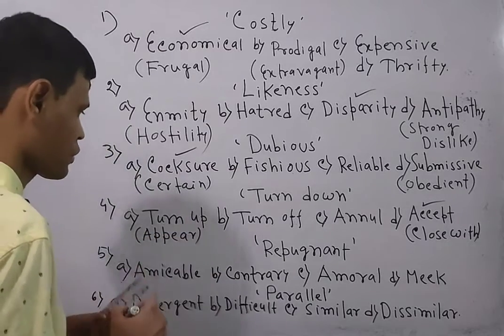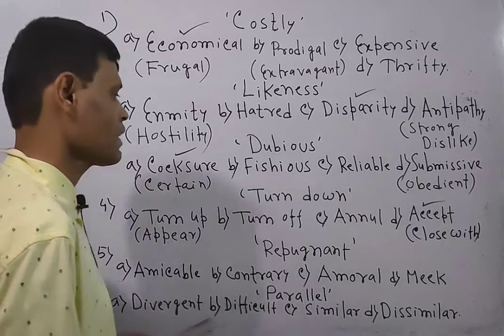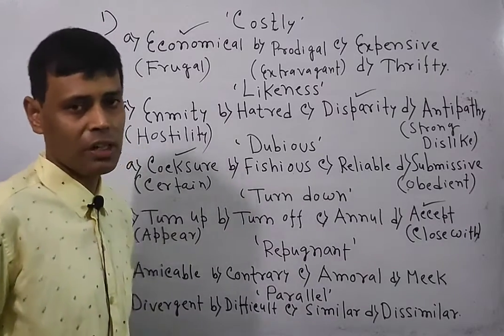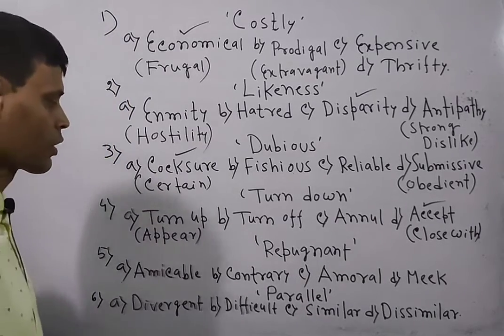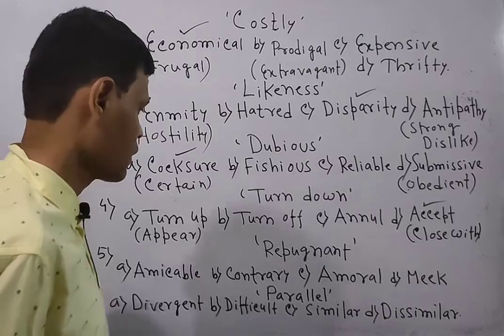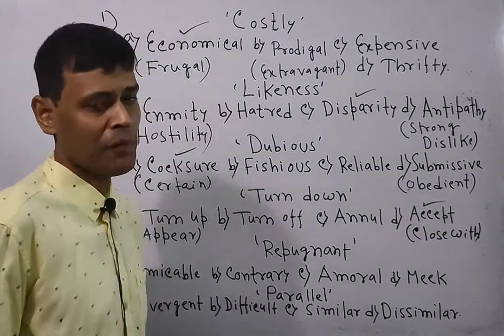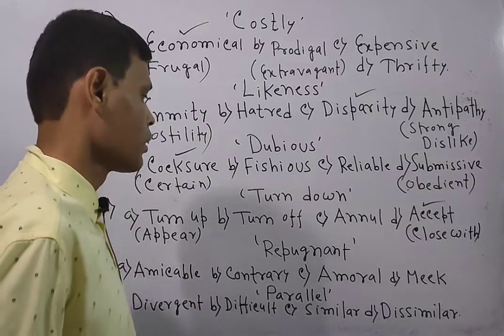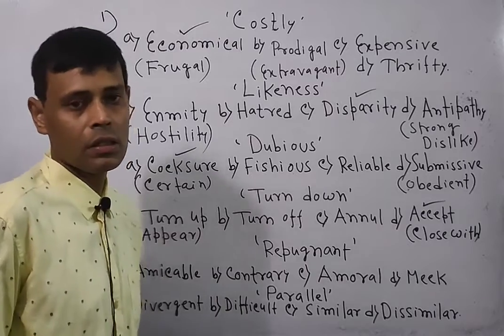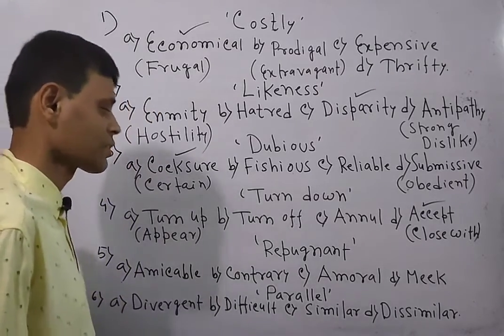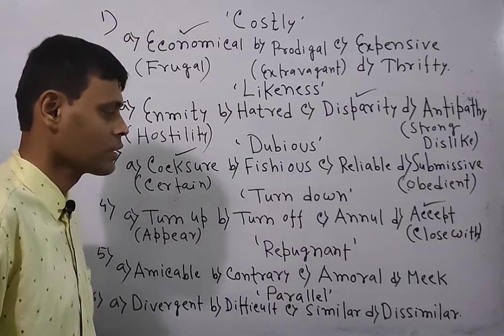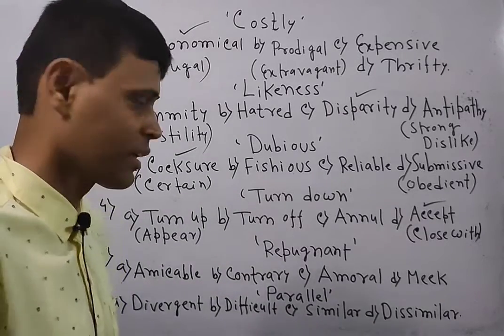Now look over the next question: repugnant. Repugnant means contrary or opposite. Amicable means friendly. Contrary or repugnant are equal in meaning. Amicable means very lovable. Meek means extremely gentle. Amoral means having great lovable feelings, etc.